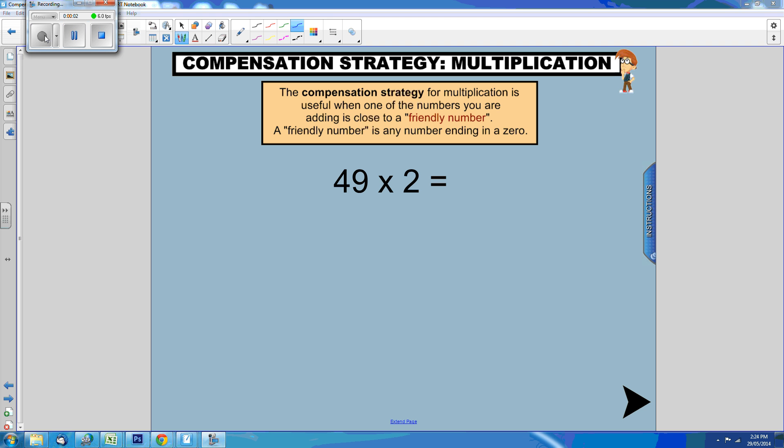We can use the compensation strategy to help us solve this multiplication problem: 49 times 2. 49 is close to the friendly number 50.